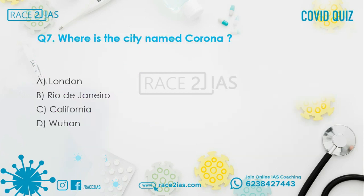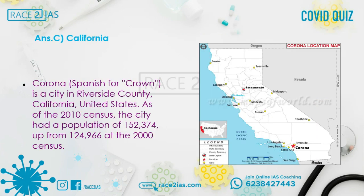Question number 7: Where is the city named Corona? Option A: London. Option B: Rio de Janeiro. Option C: California. Option D: Wuhan. The right answer is Option C, California. Corona is a city in Riverside County, California, United States. As of the 2010 census, the city had a population of over 1.5 lakhs, up from 1.25 lakhs at the 2000 census.